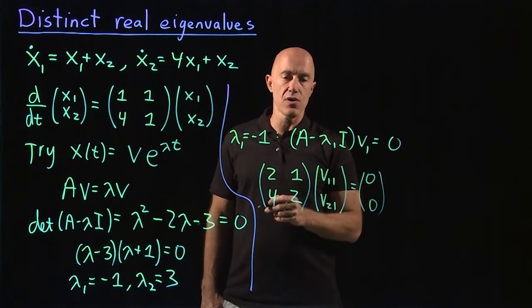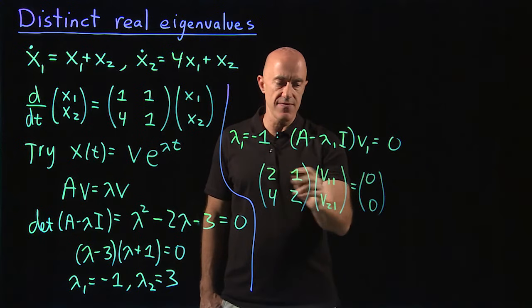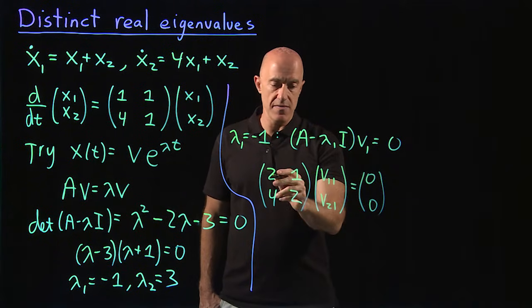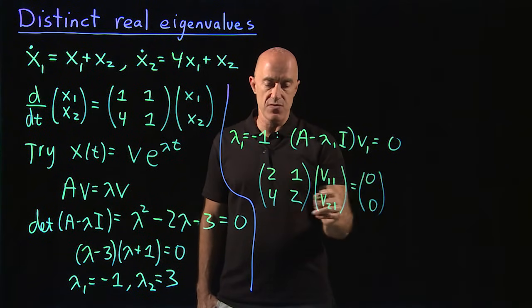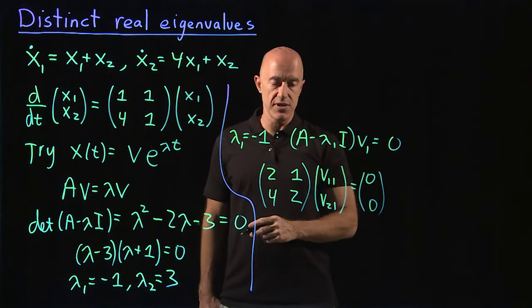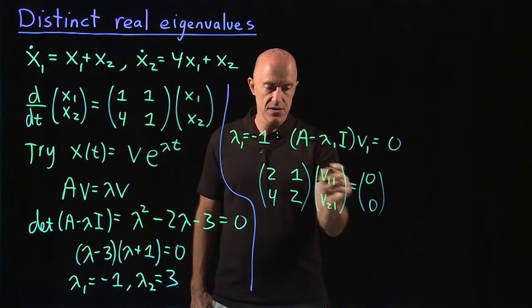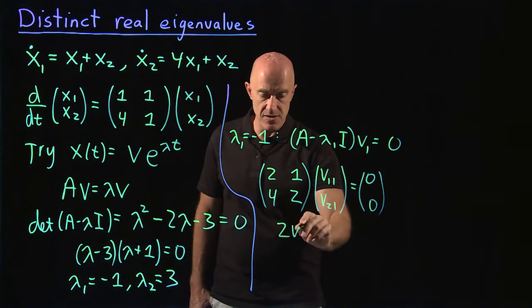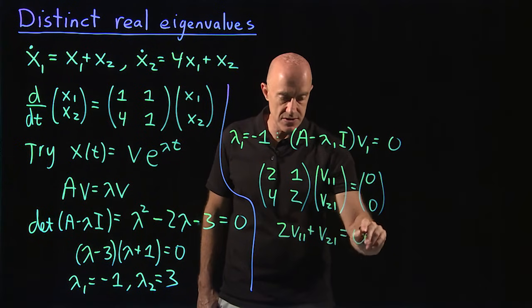As the case for all 2 by 2 matrices, when you compute the eigenvector, the second row is just a multiple of the first row. So the second equation is just 2 times the first equation. So you only need one of these equations. So we get 2v₁,₁ plus v₂,₁ equals 0.